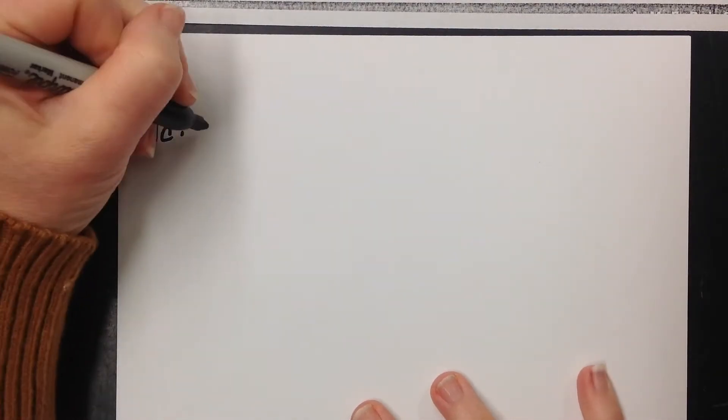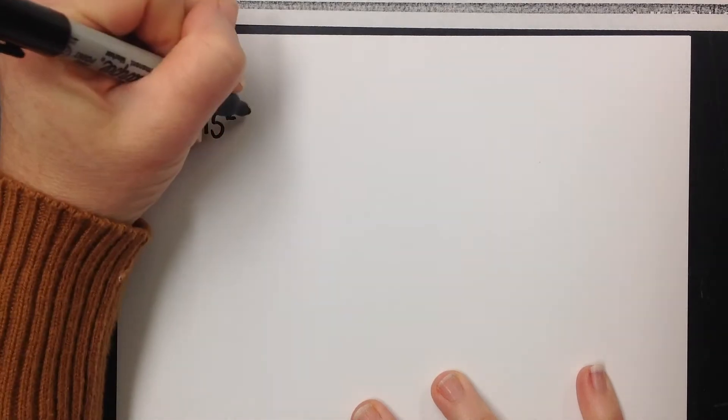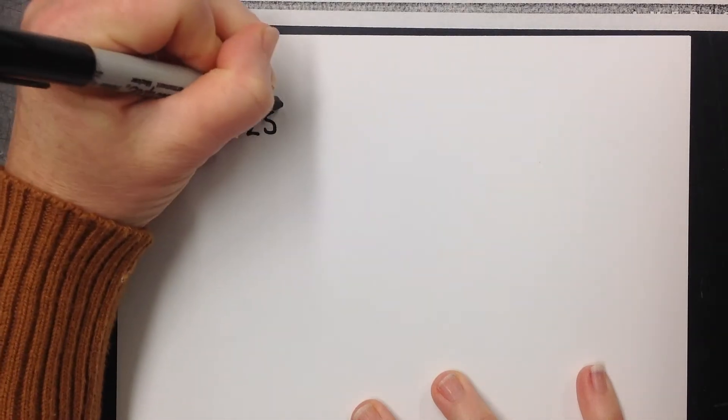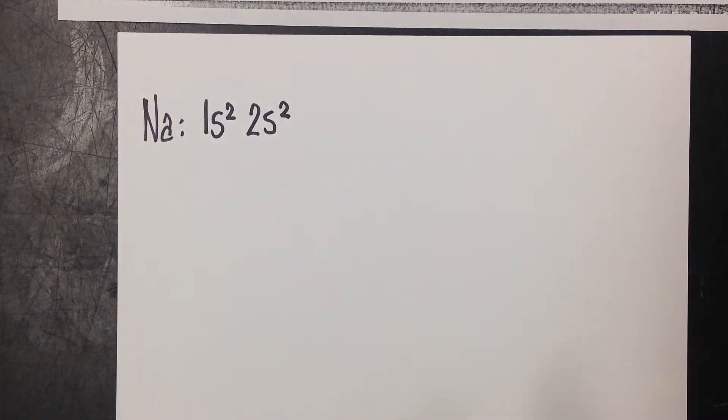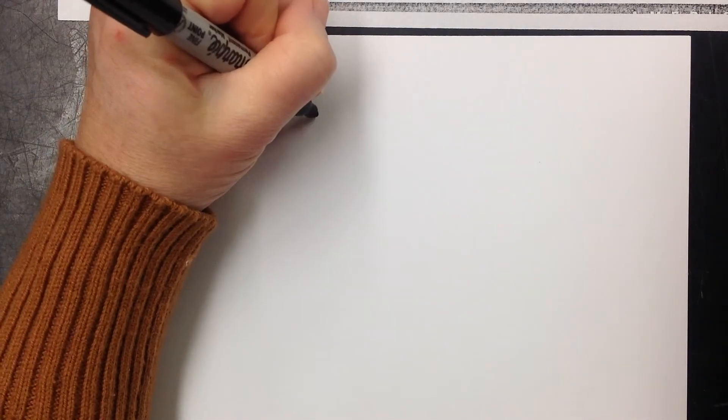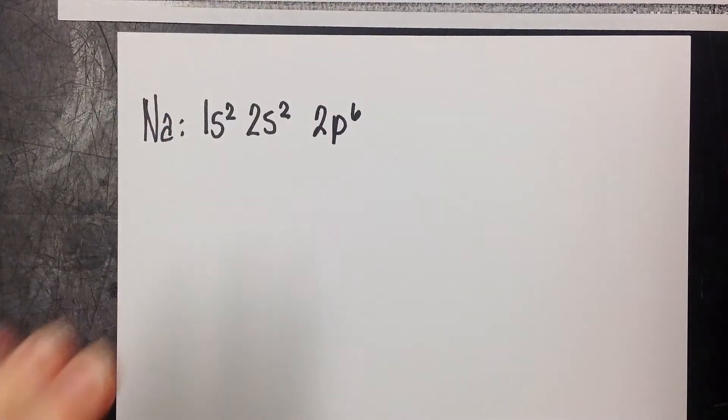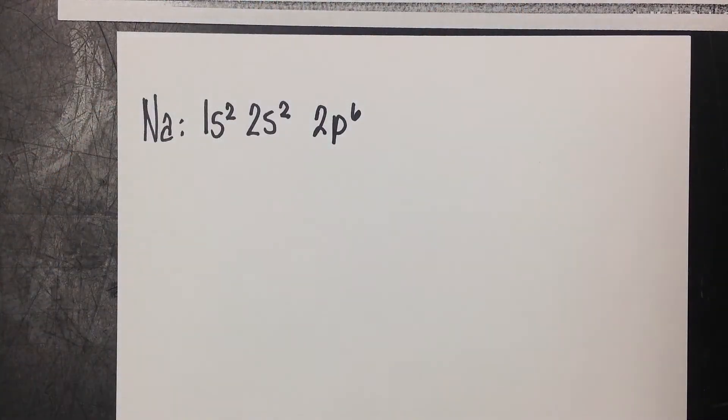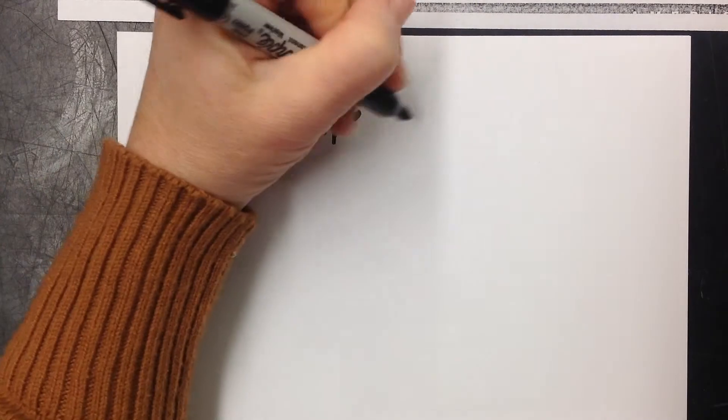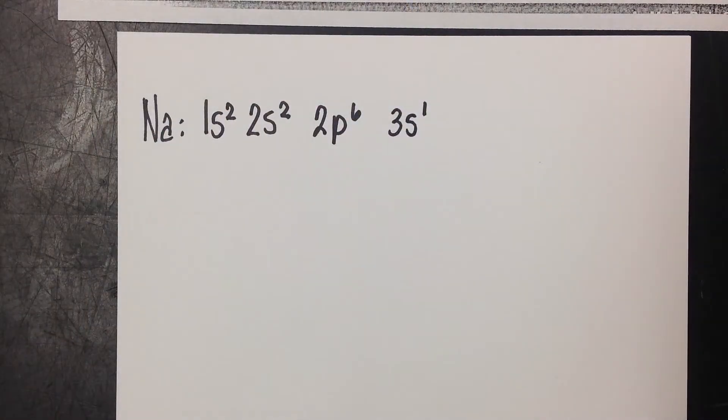So the first thing we're going to do is write down that electron configuration, which is as follows. 1s2, 2s2. Now you're going to notice me leaving a little more space here than you're used to seeing with electron configuration. The next thing we're going to hit is 2p6. You see I left a little more space there. And then we're going to hit 3s1. And that's the electron configuration for sodium.